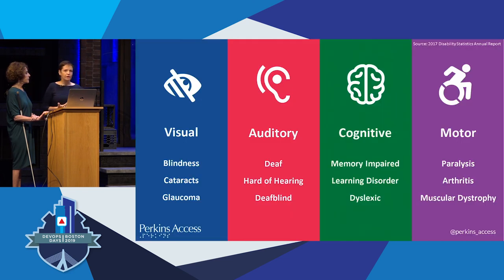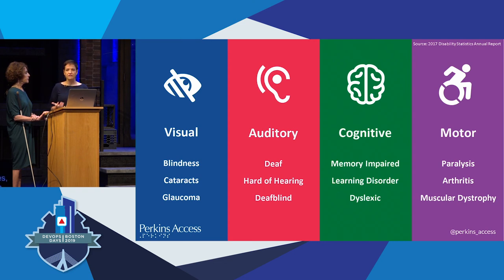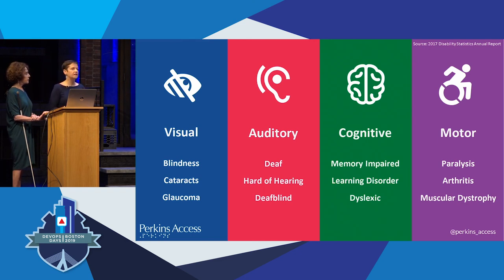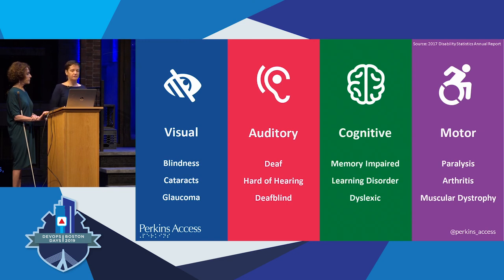We group disabilities into four key categories: visual, which includes blindness, low vision, cataracts, and glaucoma; auditory disabilities, which include deafness and hard of hearing; deaf-blindness, which obviously spans both categories; cognitive impairments, such as learning disabilities, dyslexia, attention disorders, and memory impairments; and motor disabilities, which could be paralysis, partial paralysis, limited use of hands, arthritis, chronic pain, or muscular dystrophy.